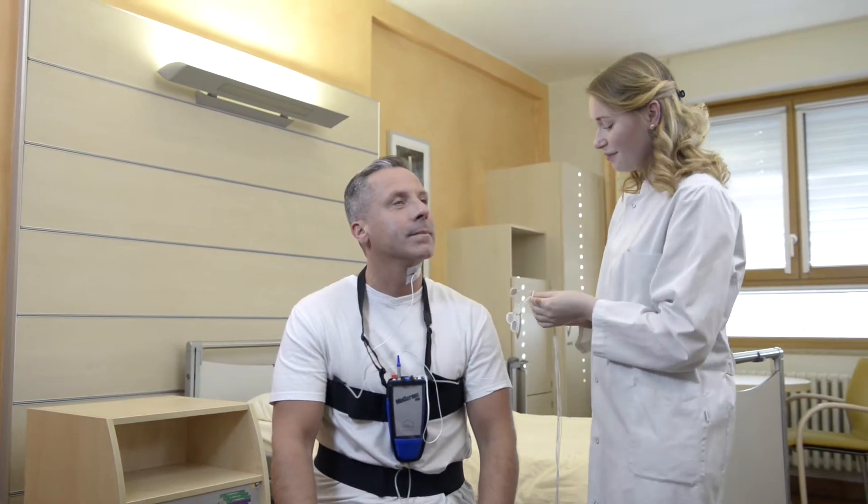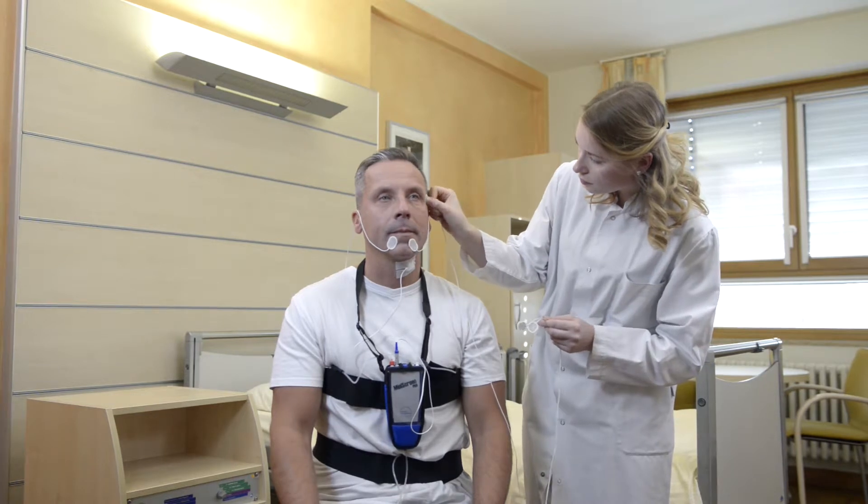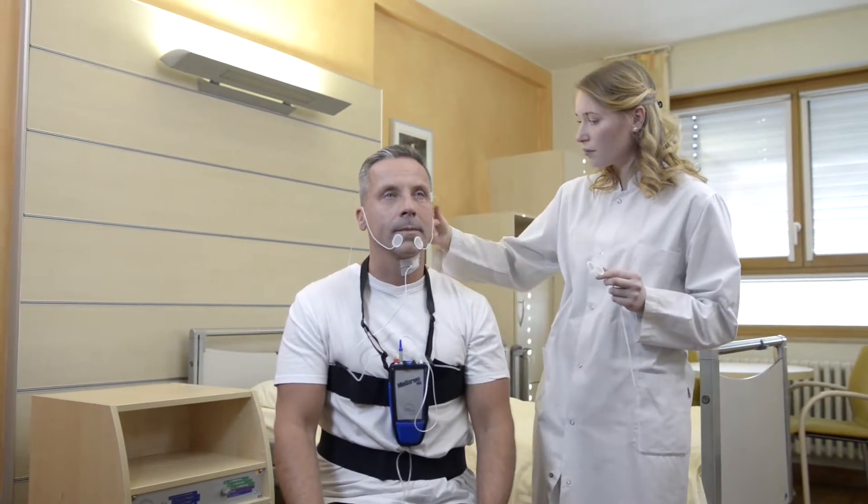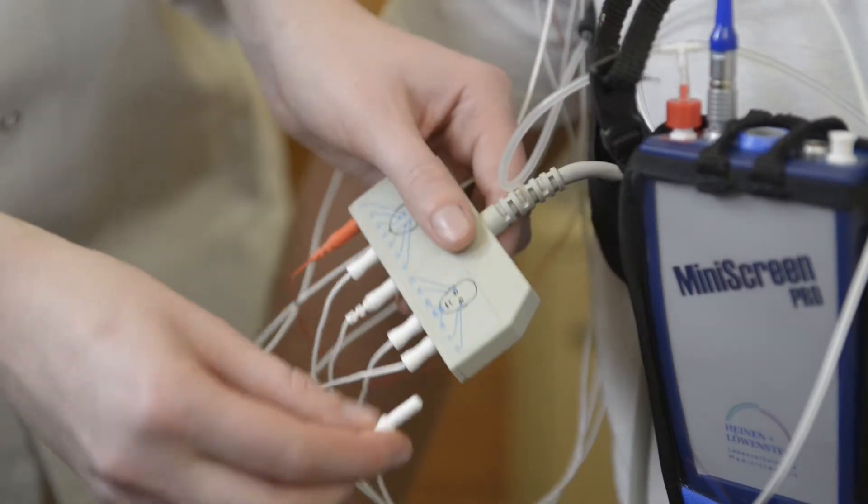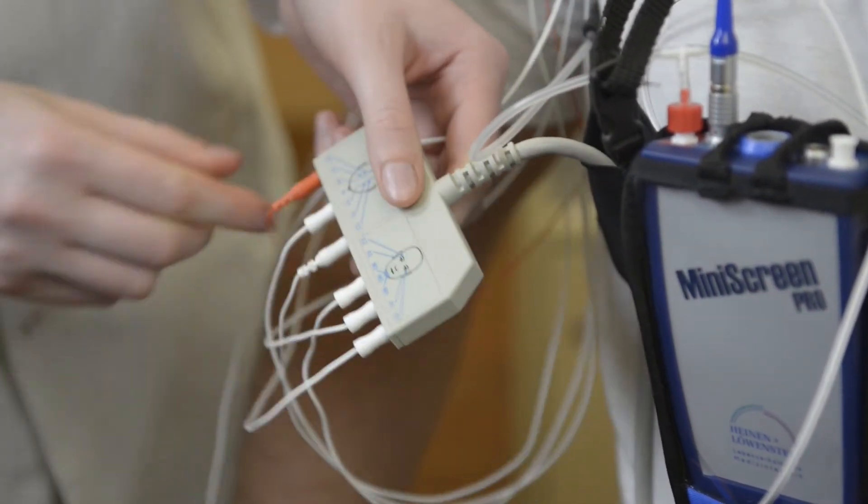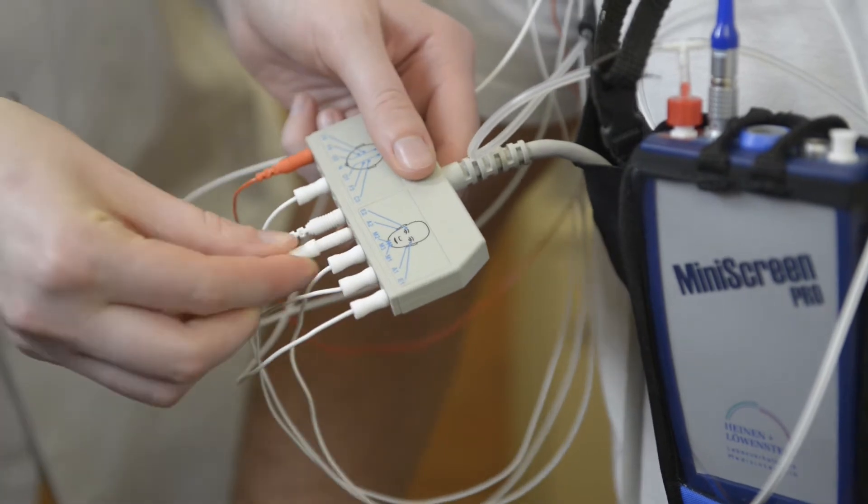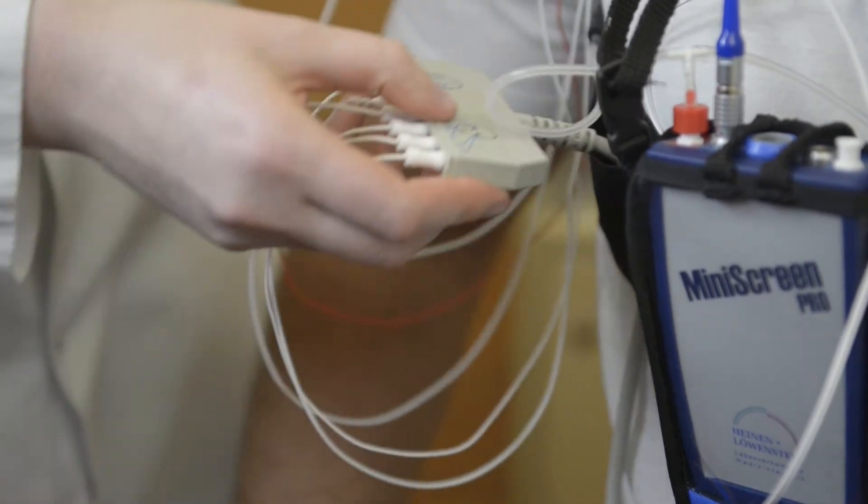The EMG records chin activities, and the EOG records eye movement during the night. The EEG parameters measure brain flows for classifying sleep stages the following morning.